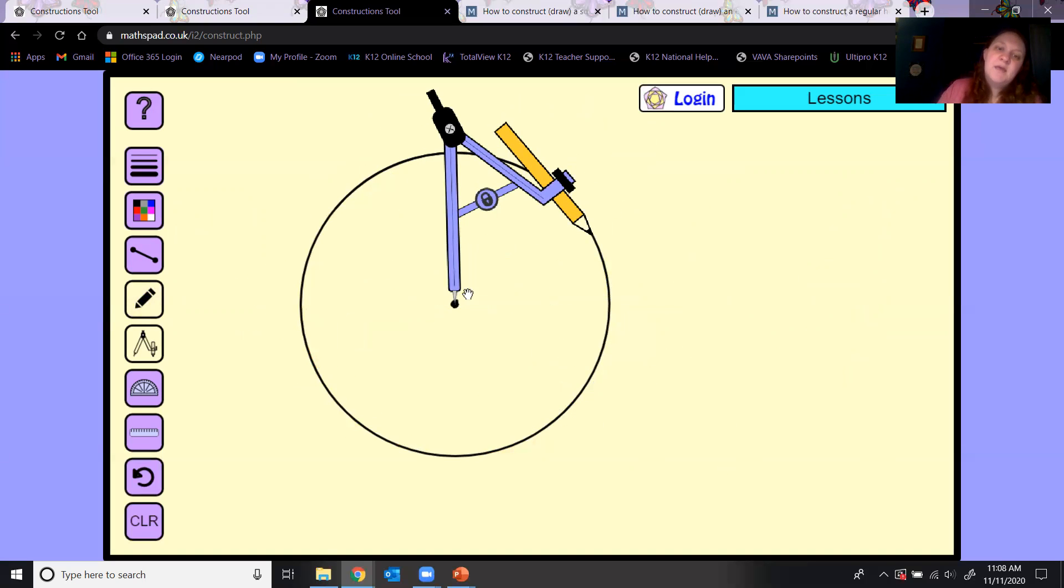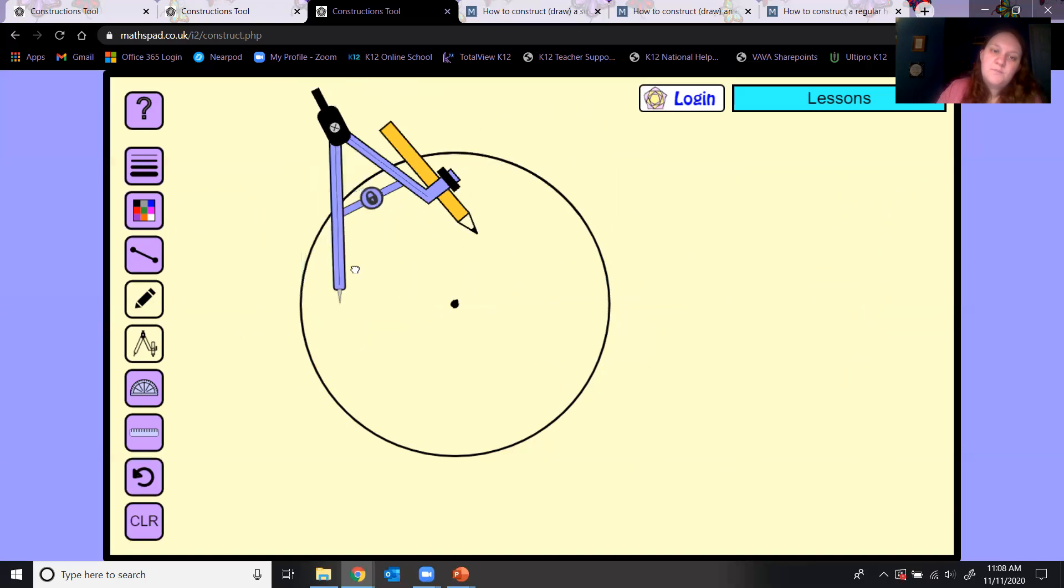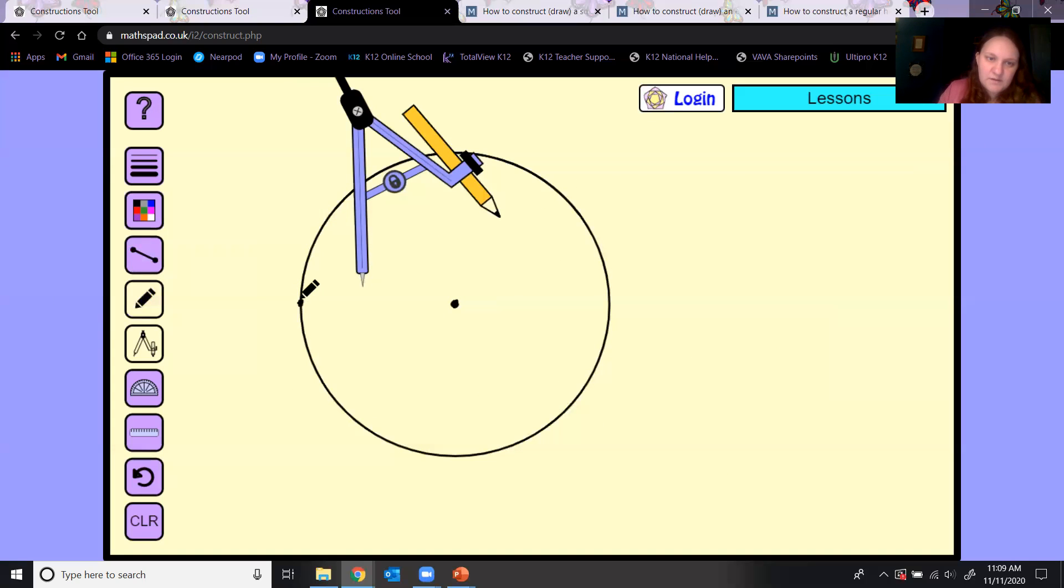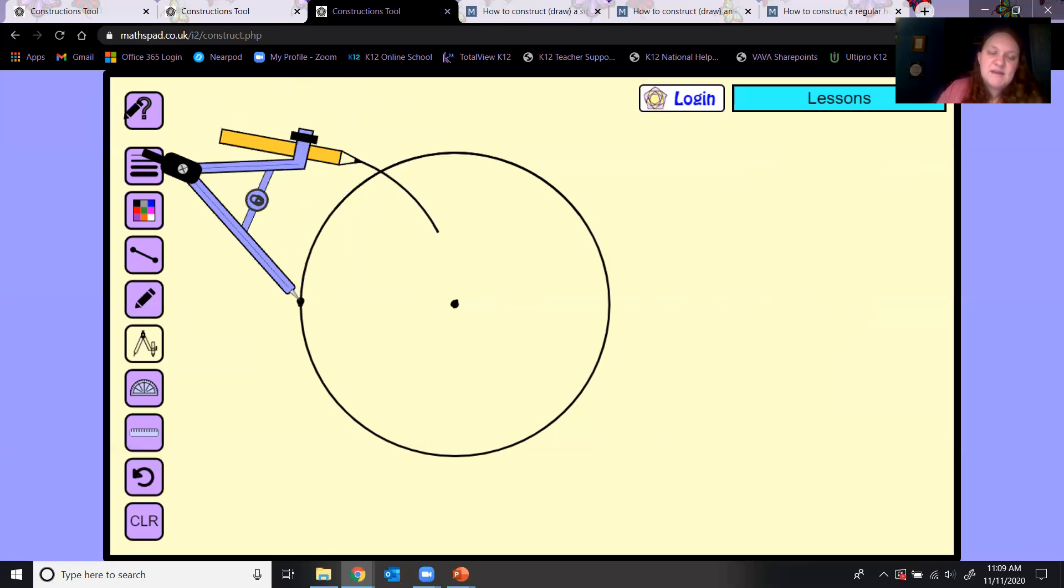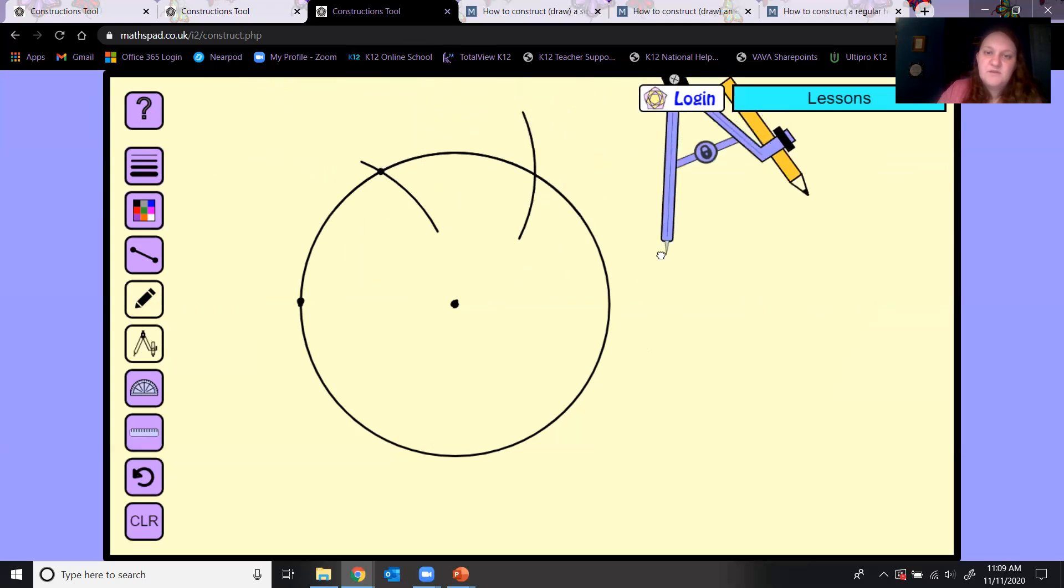Keeping your compass at the same setting, put a point on the circle, any point you want. That's going to be where I start. Put your point there and make arcs that intersect the circle. Here I have one arc. I have this new intersection, so I'm going to move my compass to that intersection and make another arc. I'm going to continue to follow that process the whole way around.